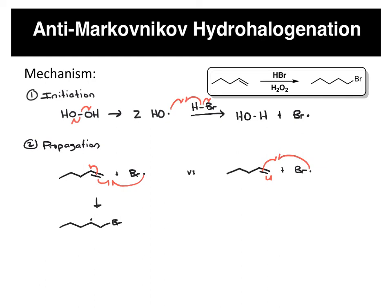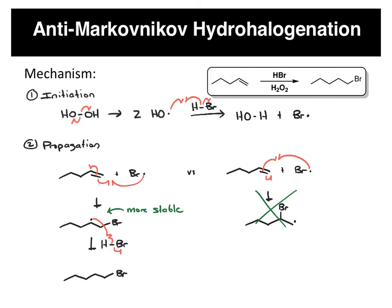Here's the bromine at the less substituted carbon, and here's the bromine at the more substituted carbon. Based on these two radicals, the one on the left is a more stable intermediate because it's more substituted. So that is the preferred pathway. From here, it goes through this radical intermediate, and then that can abstract the hydrogen from the HBr. That gives us our anti-Markovnikov product, plus a bromine radical, which can now do another round of propagation.